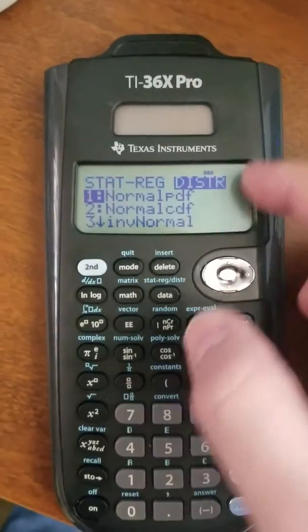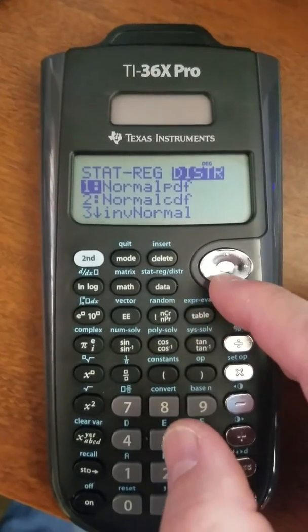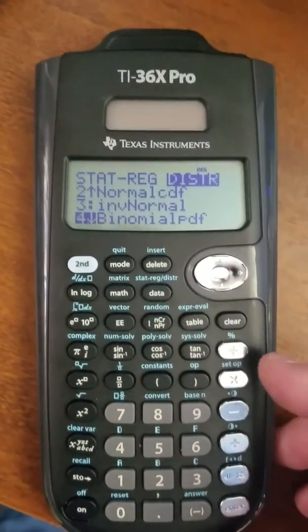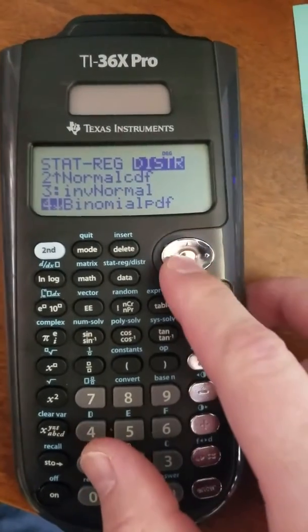I'll press over to get into the distribution submenu, and then I'll scroll down for a little while. There's my binomial PDF, and just below it is the binomial CDF.